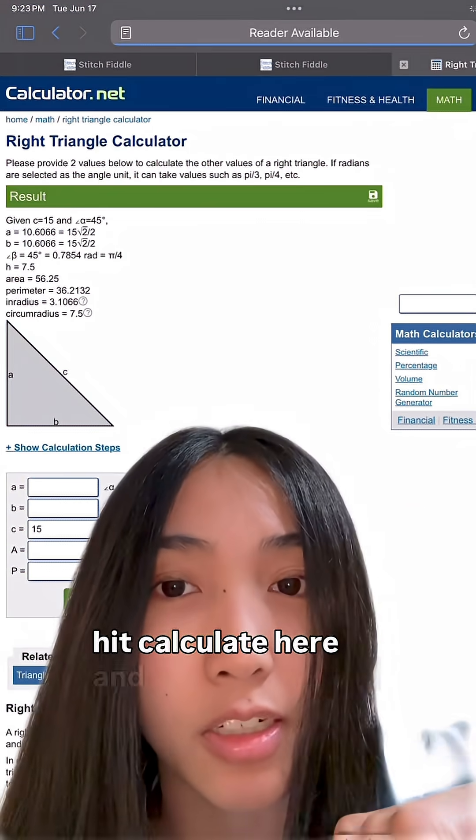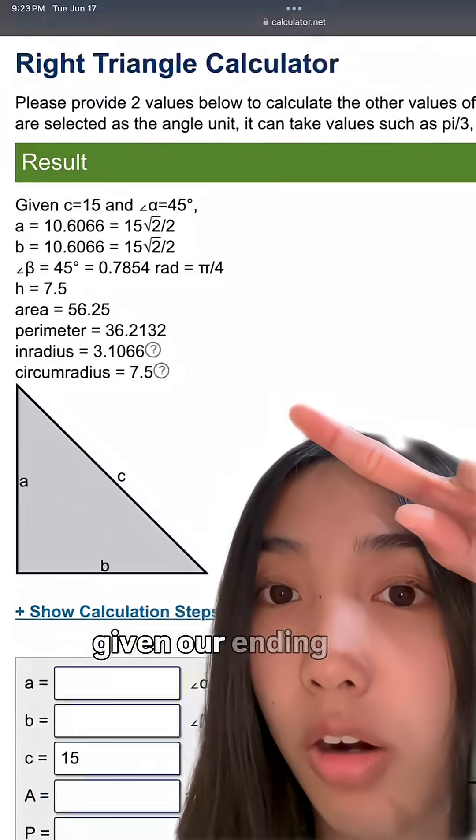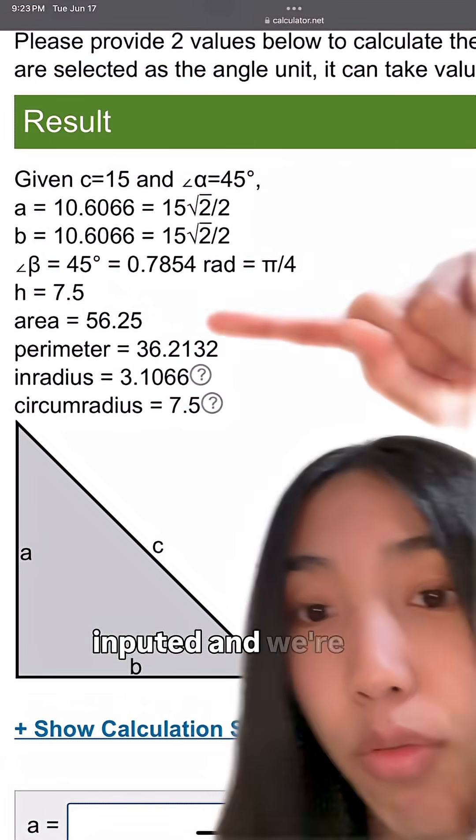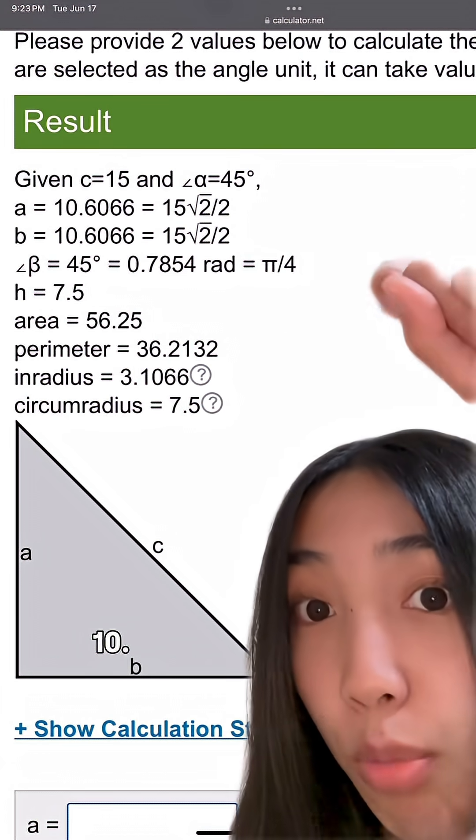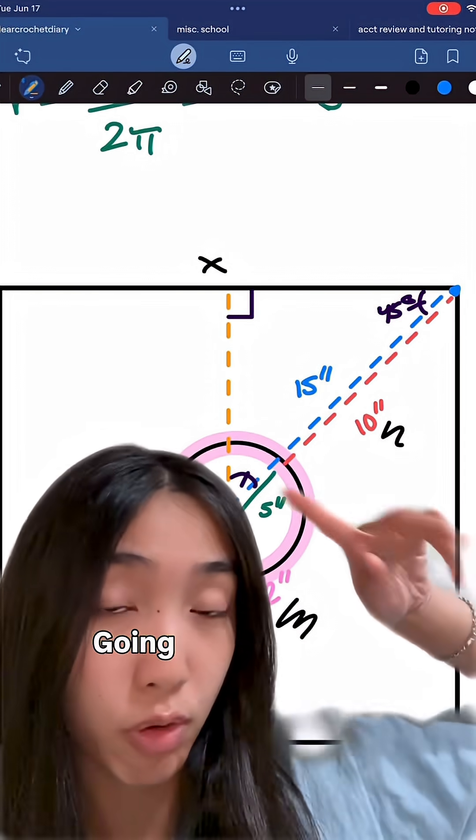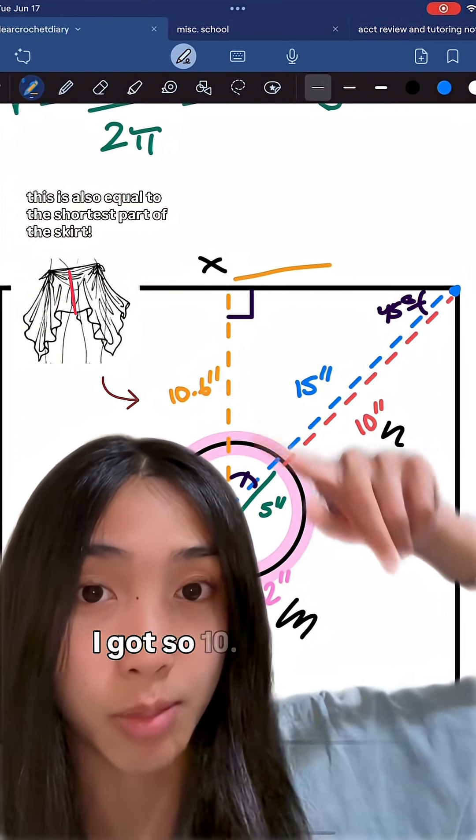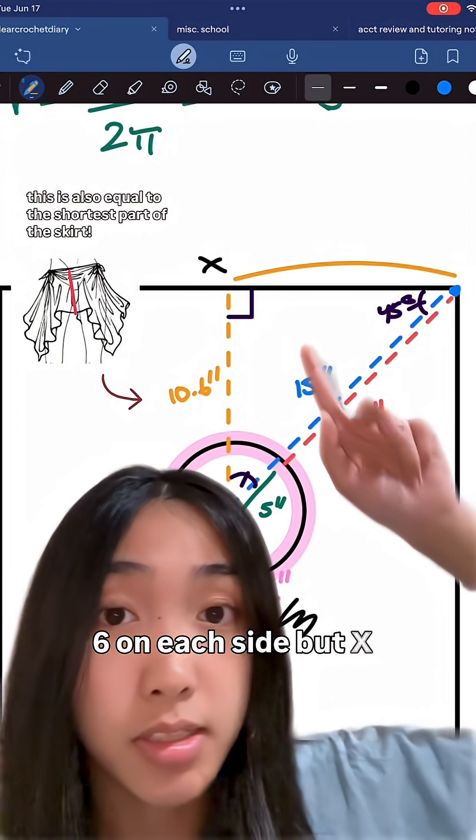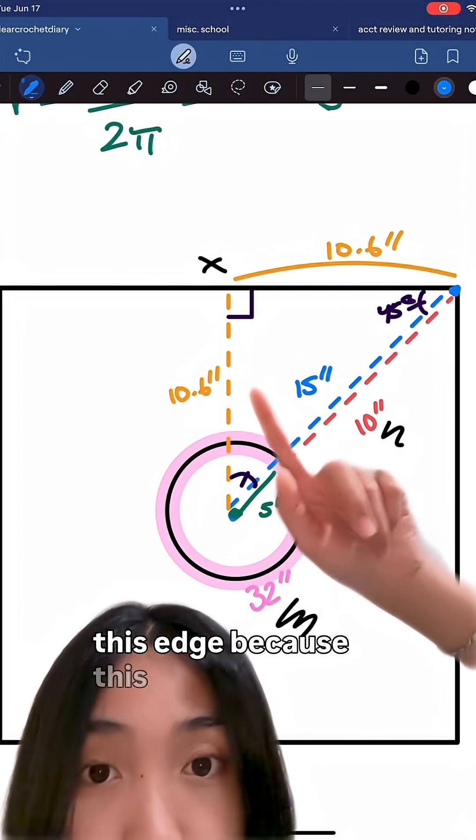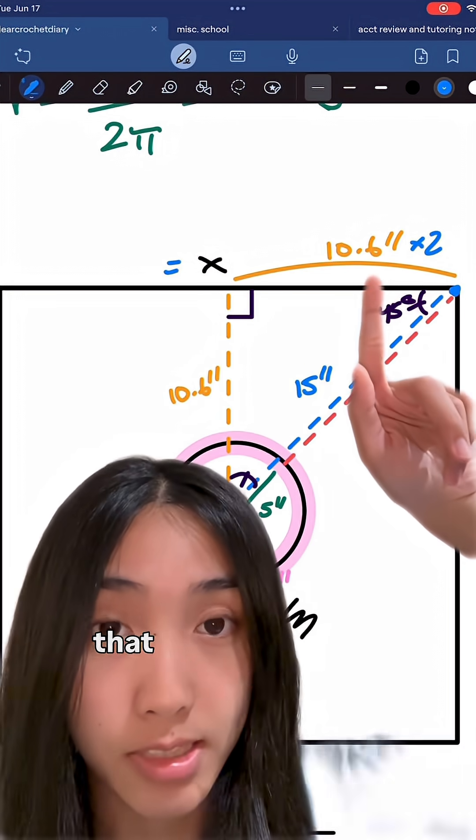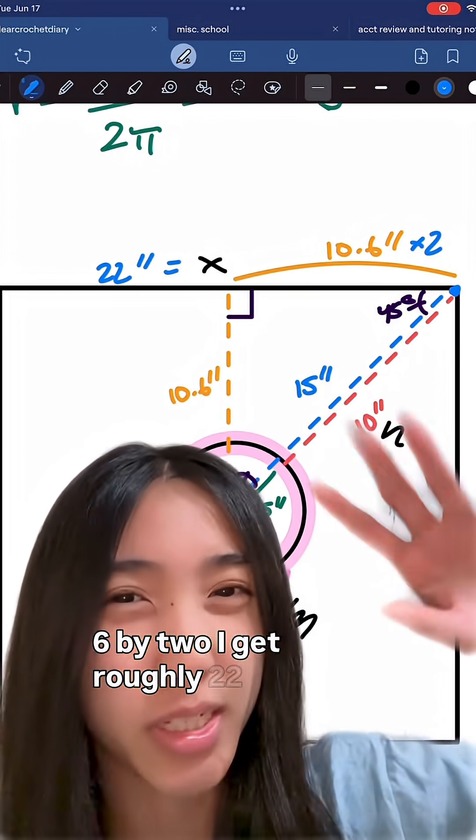I hit calculate here and now we're given our ending values. So there's the 15 inches and the 45 that we inputted. And we're told that a and b are 10.6 for me. Going back to my little diagram, I'm just plugging in the a and b values that I got. So 10.6 on each side, but x is equal to double of this edge because this line splits this side into two. So multiplying that 10.6 by 2, I get roughly 22 inches.